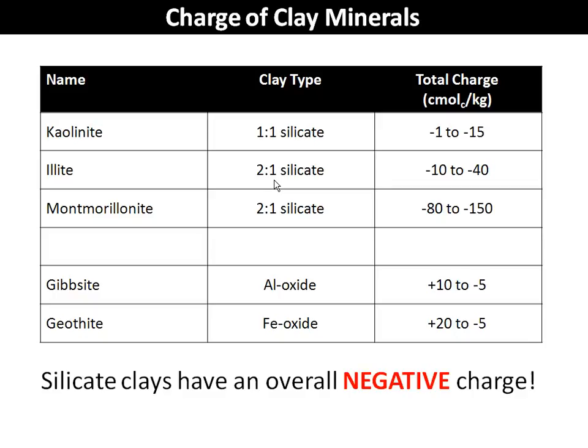I've also added two other minerals worth mentioning: two clays that fall into the oxide group. These are not the clay minerals we commonly have in our soils in large quantities. Structurally very different, they can actually have a net positive charge — or potentially a negative charge; it can be variable. Silicate clays, though — the ones we're focusing on: kaolinite, illite, and montmorillonite — have an overall net negative charge as a result of the unshared oxygen atoms and isomorphic substitution.